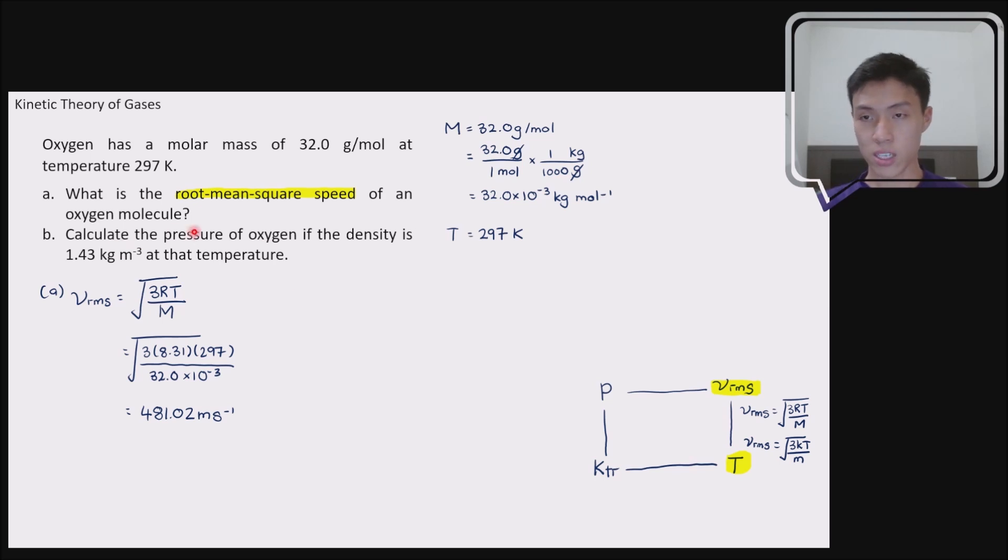Let's follow through the next question. The next question asks for the pressure of the oxygen if the density is 1.43 kg per meter cube at that temperature. So they're asking for pressure. In this rectangle over here, pressure is on the left top corner. So right now, we have already moved to this side of the rectangle, which is the top part of the rectangle.